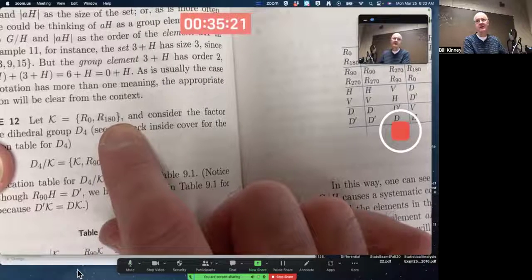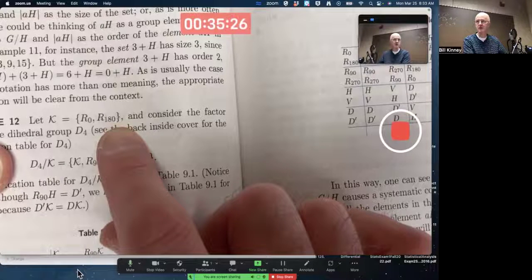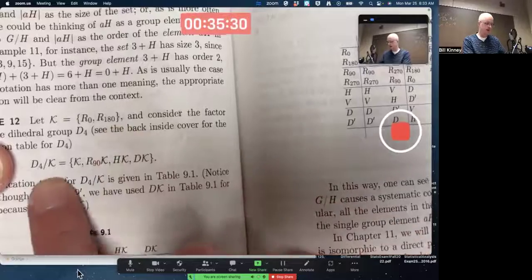D4 is not abelian, so it's not obvious that this is going to be a normal subgroup, but it is. You can check it. So you can form the factor group.